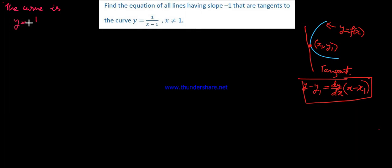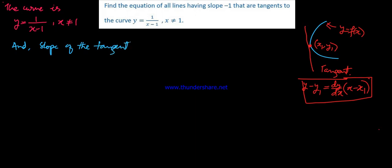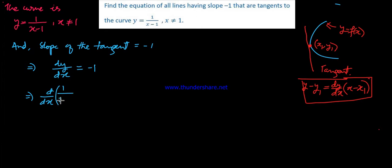The curve is y equals 1 over x minus 1. The slope of the tangent equals minus 1. So we set the derivative dy/dx equal to minus 1.